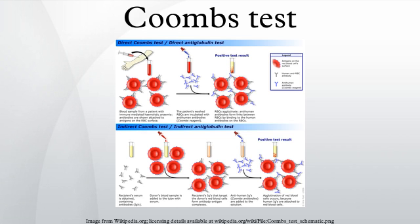A memory device to remember that the DAT tests the RBCs and is used to test infants for hemolytic disease of the newborn is: RH disease — R equals RBCs, D equals DAT.